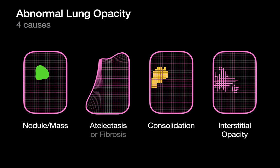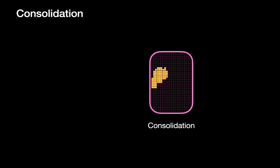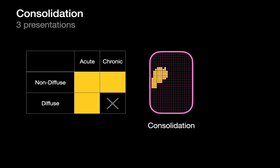There are four main reasons why you may encounter an abnormal opacity within the lung, and consolidation is one of them. The approach to interpreting consolidation is bucketized between acute versus chronic presentations of consolidation and non-diffuse versus diffuse distributions of consolidation.